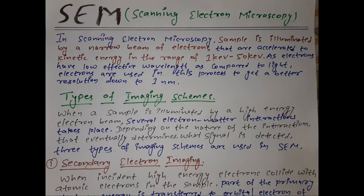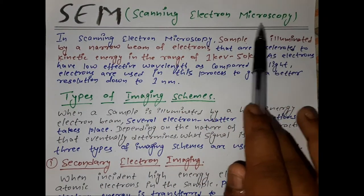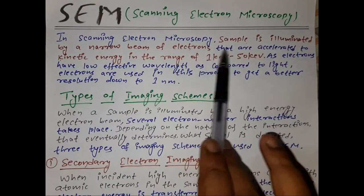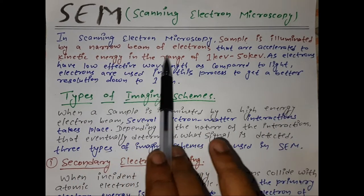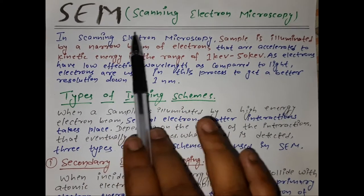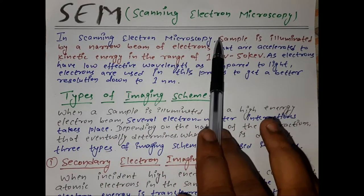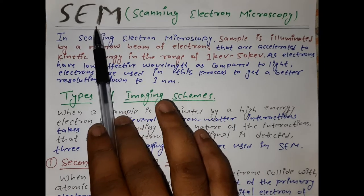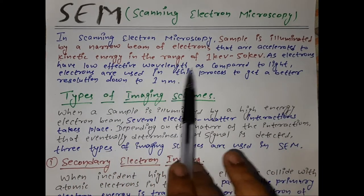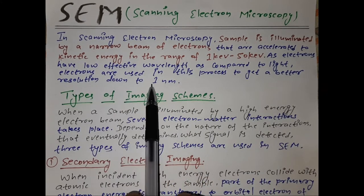In scanning electron microscopy, a sample is illuminated by a narrow beam of electrons that are accelerated to a kinetic energy in the range of 1 kiloelectron volt to 50 kiloelectron volts. In SEM, electron beams are scanned over the samples. As electrons have a lower effective wavelength compared to light, they are used in this process to achieve a better resolution, down to even one nanometer.